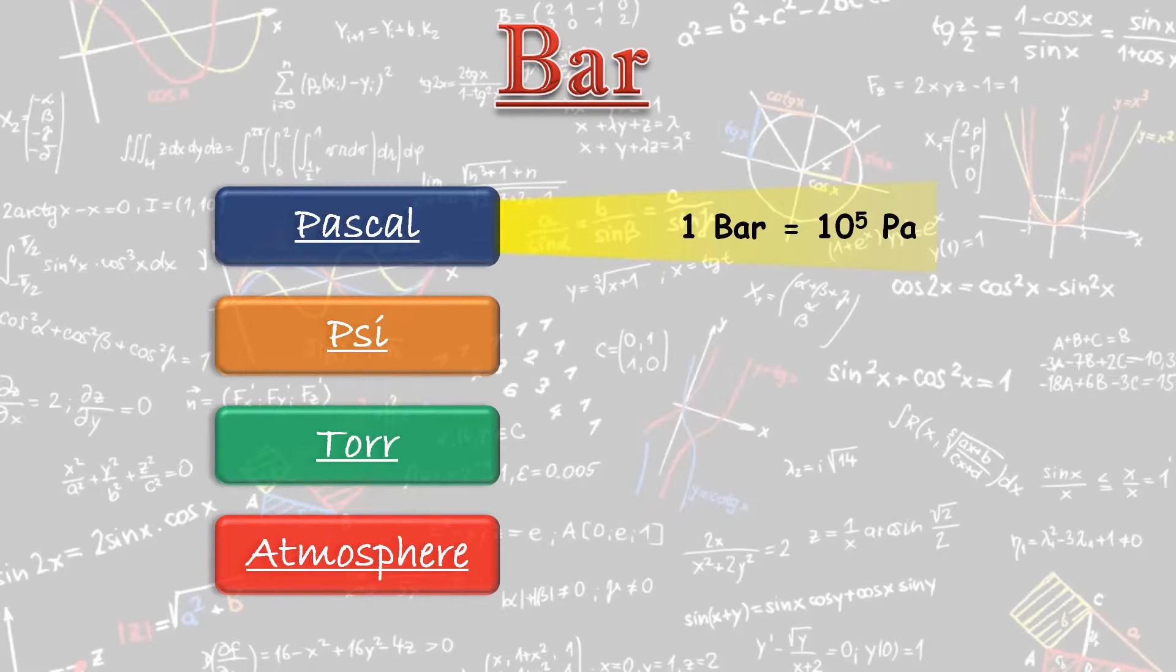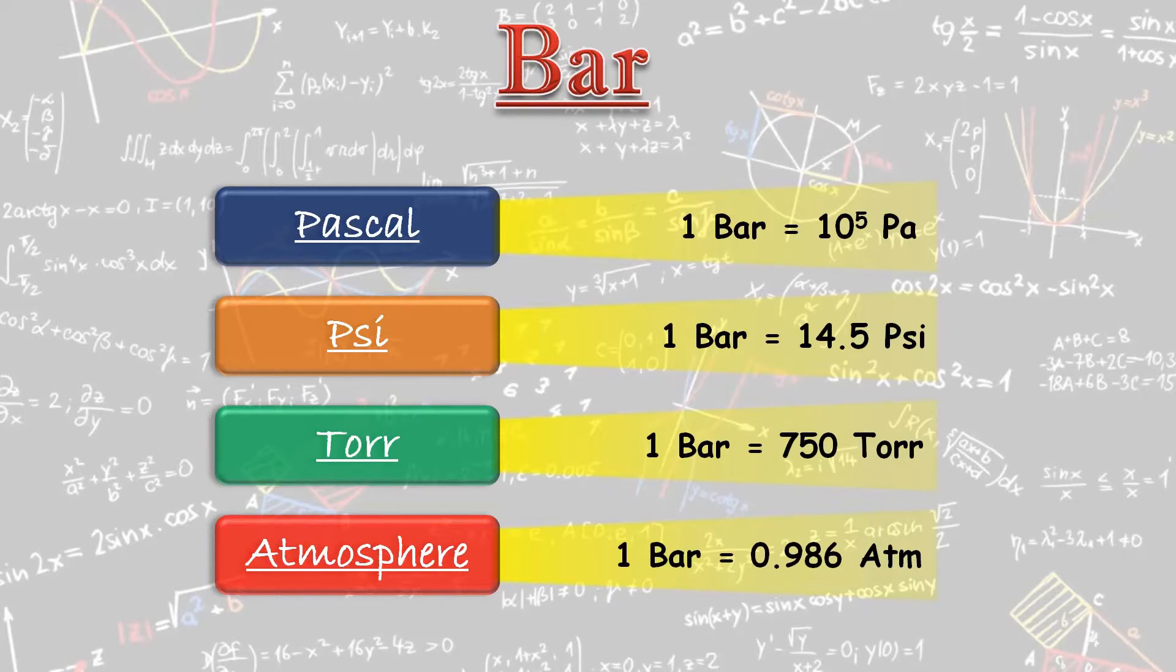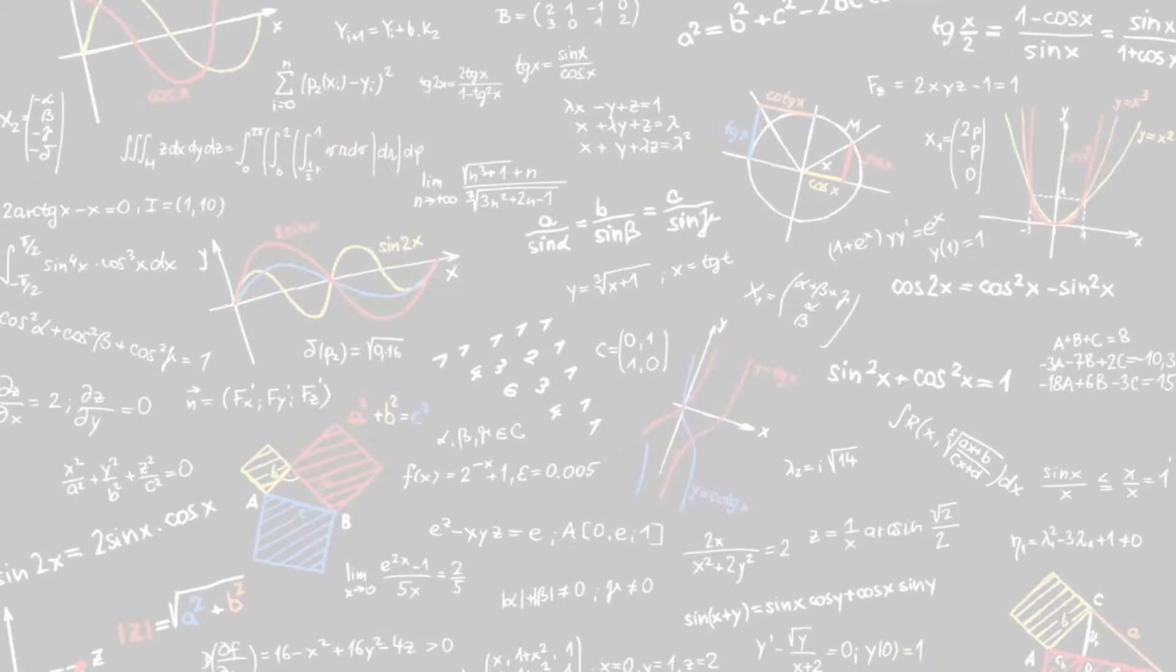1 bar is equal to 10^5 Pascal. 1 bar is equal to 14.5 PSI. 1 bar is equal to 750 Torr and 1 bar is equal to 0.986 atmosphere.